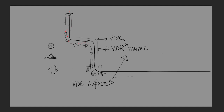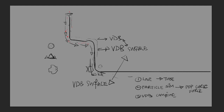Let me list down what we are going to do in this video. Step one: create a line which then creates the tube. Step two: create a particle simulation that runs along a curve using a node called the pop curve force. Step three: use VDB combine to convert geometry into surfaces. Step four: discuss tips and tricks for rendering liquids. I'll be using Redshift for this tutorial.